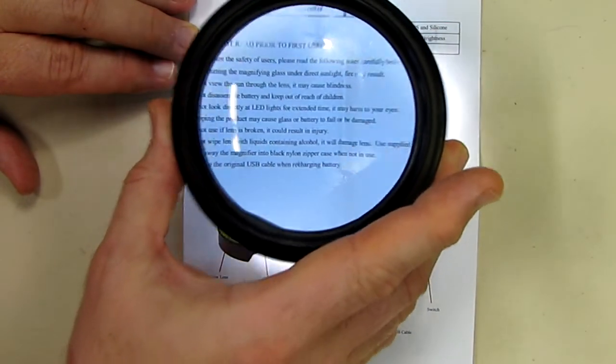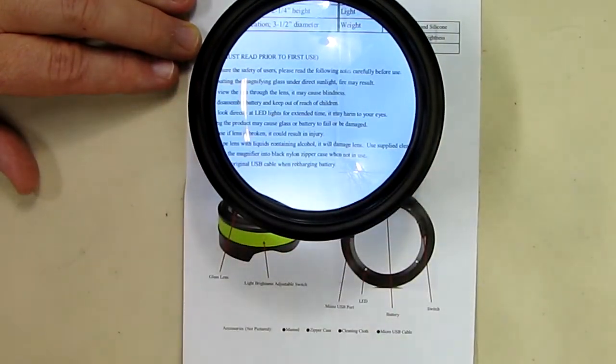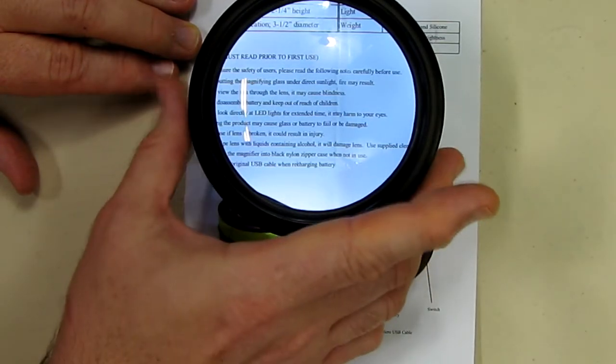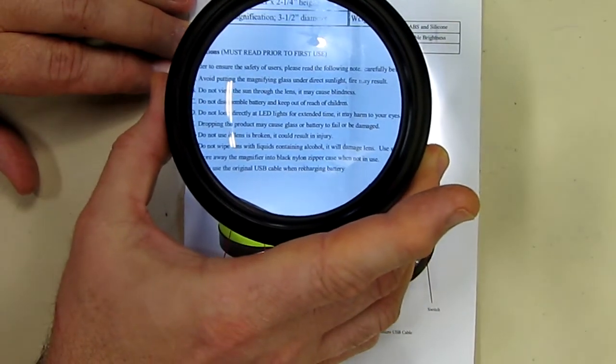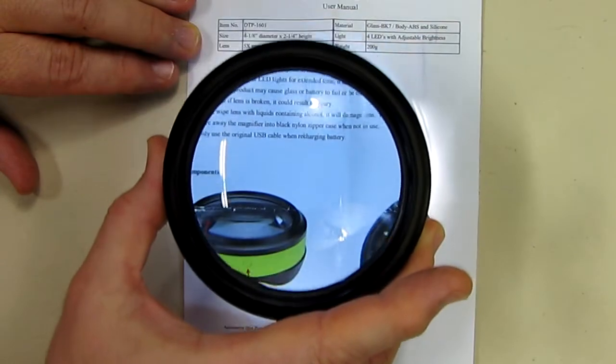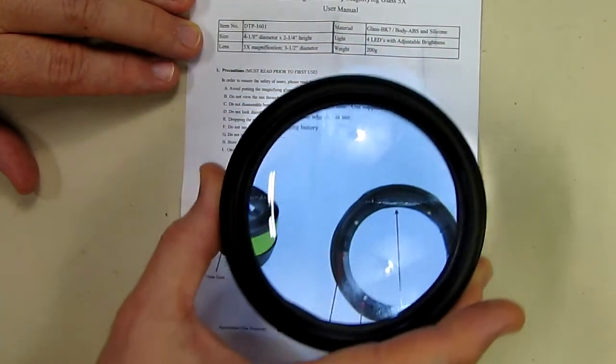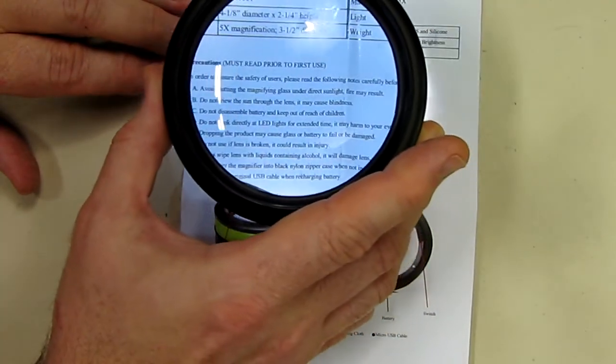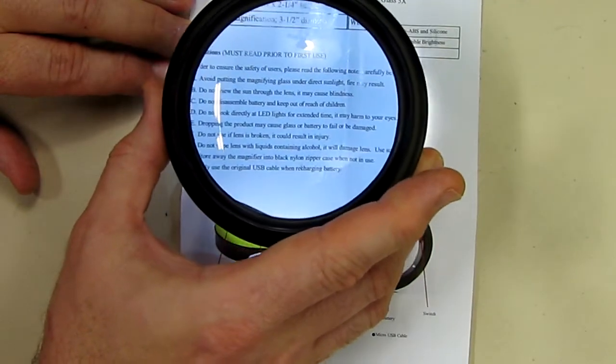Depending on your eyesight, some people might have this thing totally flat against the object, other people might have to pull it a little bit away. But it works really well, this 5x power. It's just very helpful when you're looking at text or anything—jewelry.